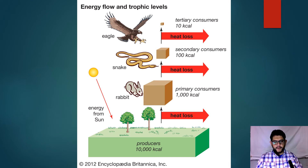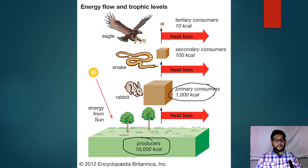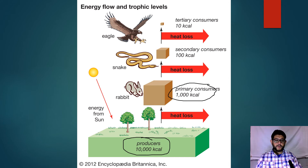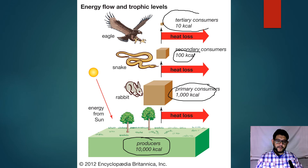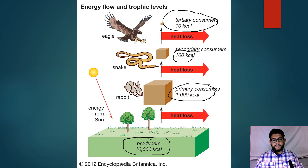Each time you move up a level, you basically just take off a zero — that's a good trick to remember this. Secondary consumers, like an animal that eats the rabbit, will only have 100 kilocalories available to them, with the rest lost as heat. Then the tertiary consumers — the predators of those — only have 10 kilocalories available.